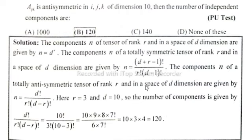The components n of a totally anti-symmetric tensor of rank r and in space of dimensions are given by formula: n is equal to d factorial divided by r factorial into (d minus r) factorial.